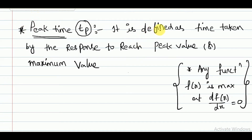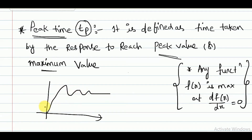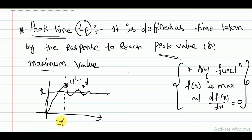The peak time is defined as the time taken by the response to reach the peak value or maximum value. The response will be somewhat like this with a unit step input. It crosses the maximum value — this is called the first overshoot, this is the first undershoot, this the second overshoot, and this the second undershoot. The first overshoot is the maximum value, and the time taken for the response to reach this value is called peak time.